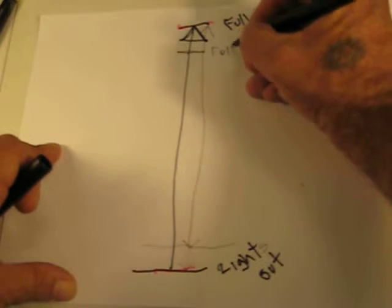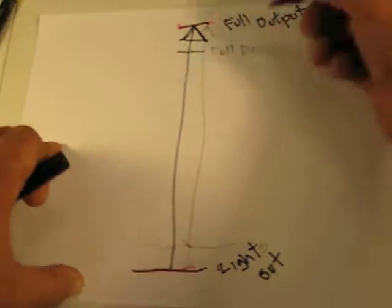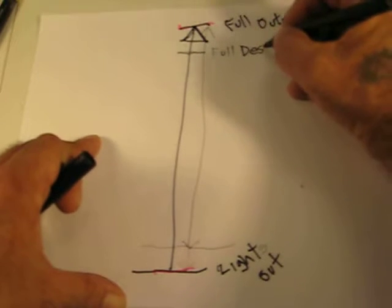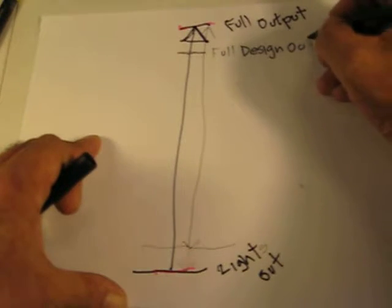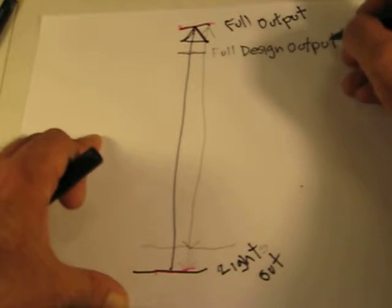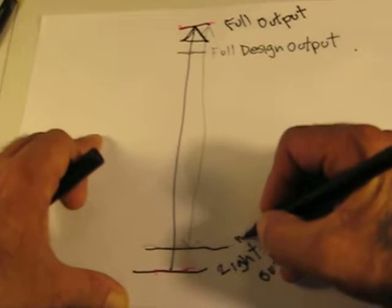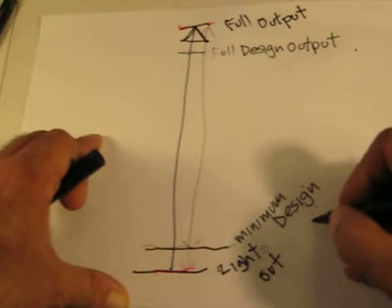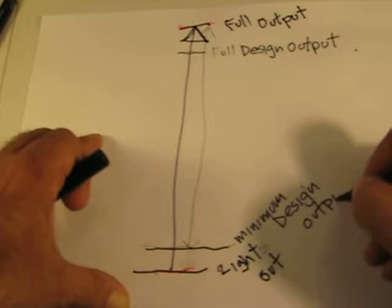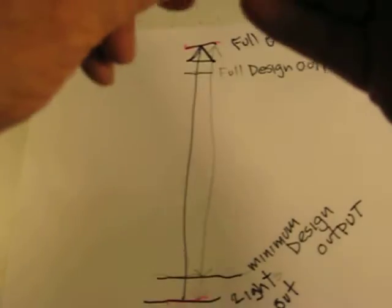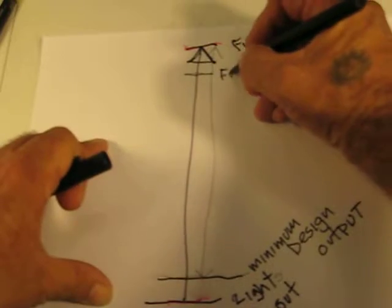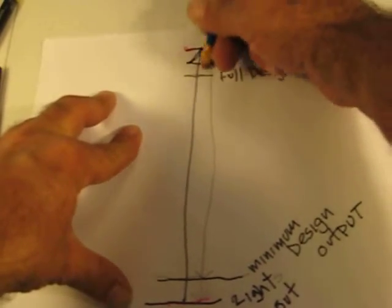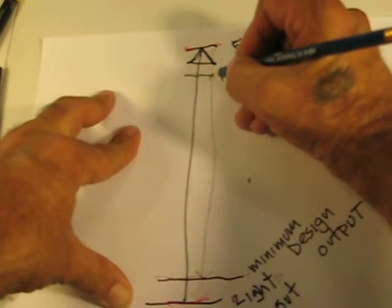This is typical of lighting installers — they will shave a little off the top when they put the thing together. So now we will not be able to manually dim between minimum design output and full output. We will actually have a dimming range between minimum design output and full design output. I've talked to people who put these systems in and they say they like to shave about five to six percent off the top to save the customers some money.